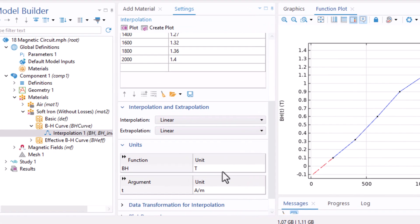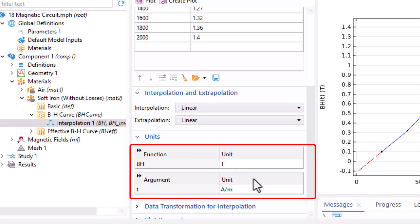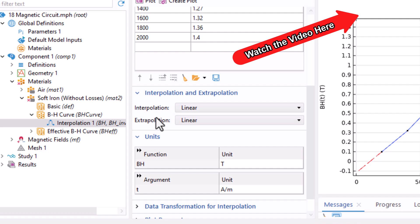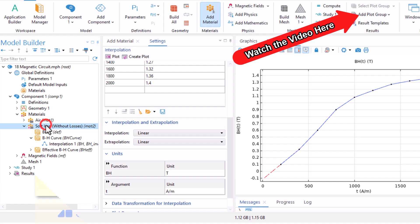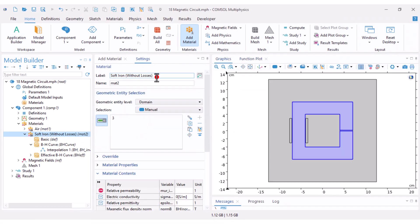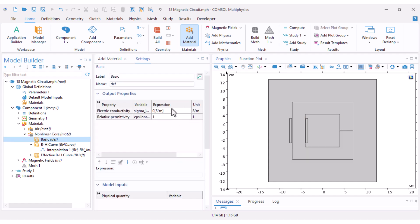The non-linear BH relationship has been imported successfully. You can click Plot to see the new curve. Make sure that the unit is correct: the input is H in ampere per turn and the output is B in tesla. I'll keep the interpolation and extrapolation settings as linear. I rename my material to non-linear core for clarity.